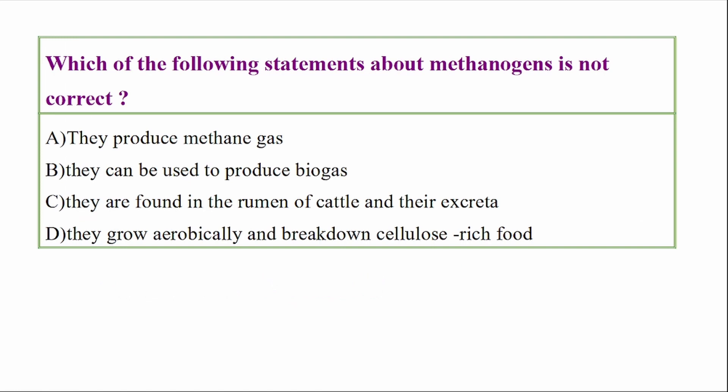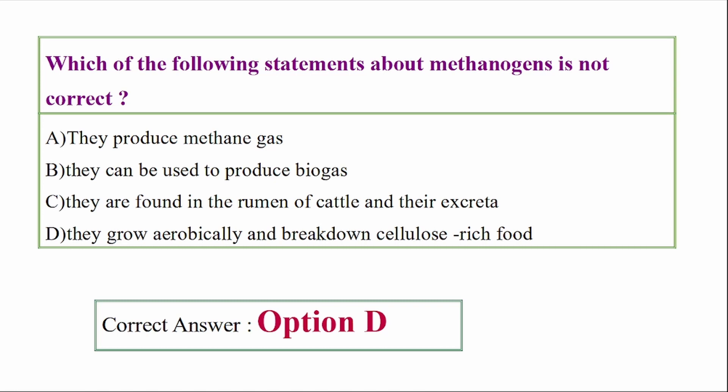Which of the following statements about methanogens is not correct? They produce methane gas. They can be used to produce biogas. They are found in the rumen of cattle. They grow aerobically and break down cellulose. Answer: They grow aerobically — methanogens are anaerobic.